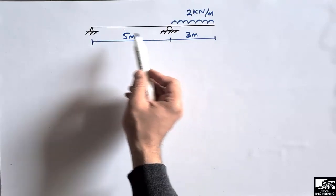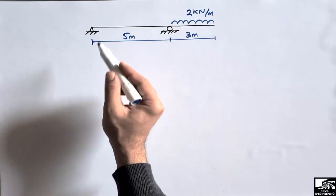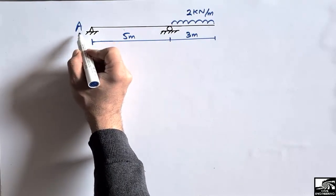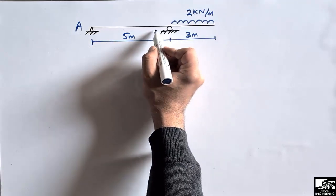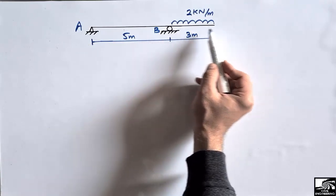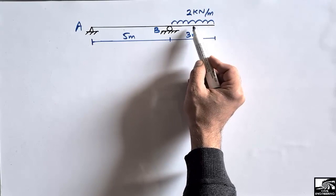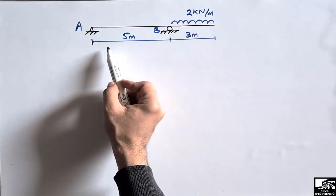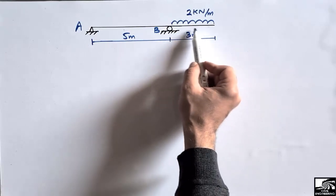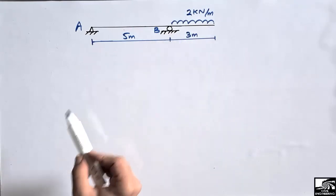In this lecture we are going to find out the support reactions to draw the shear force and bending moment diagram for this beam. This beam has two supports — one is a hinge support, represented by A, and the other is a roller support, represented by B. The portion of the beam which is hanging is loaded with a uniformly distributed load of 2 kN per meter.